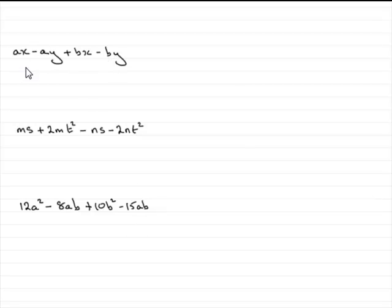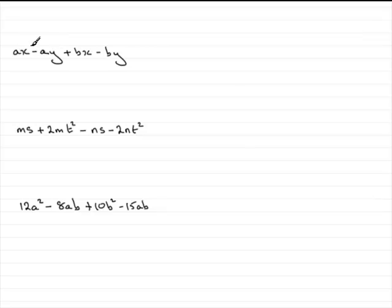Let's take the first one: ax minus ay plus bx minus by. You'll notice we haven't got an a in each of the four terms, we haven't got an x in each of the four terms, nor a y, nor a b. So how do we factorise this? Well, this kind of factorising is called factorising by grouping, because if we look at a pair of terms — the first pair — you'll notice that we have a common factor, and that common factor is a.